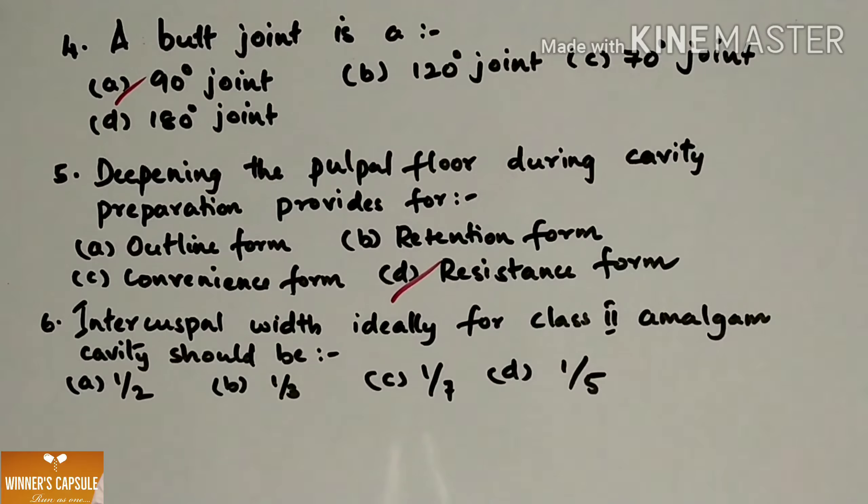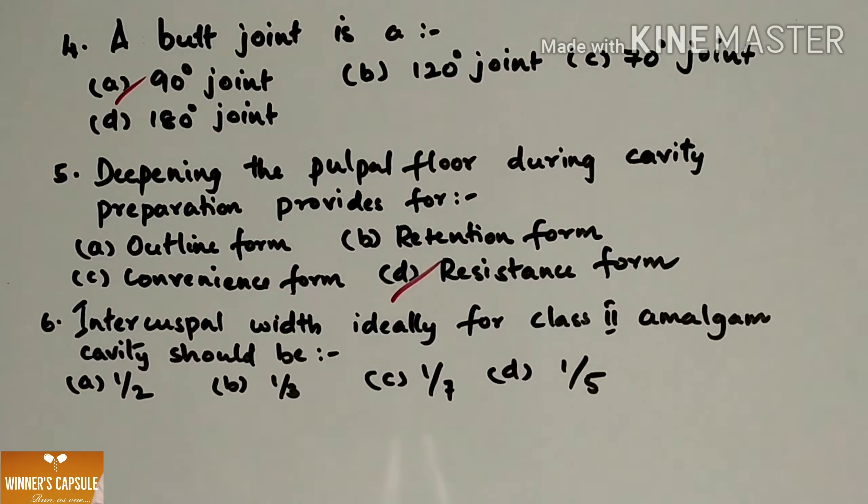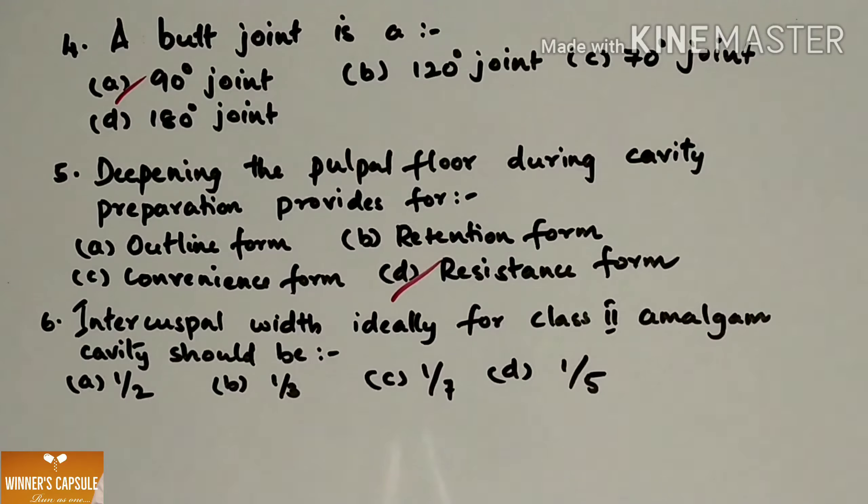Resistance form is obtained by the laterally placed floor, pulpal and gingival floor, and also box shape, then internal line angles should be rounded, then adequate thickness of the restorative material, then inclusion of weakened tooth structure and reduction of cusp for capping whenever indicated. By deepening the pulpal floor during cavity preparation, it increases the resistance form by increasing the bulk of restoration.